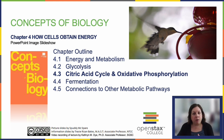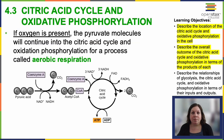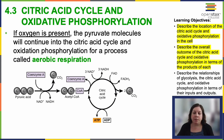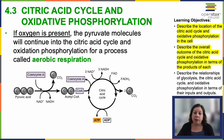Think back to our previous video on glycolysis — we left off with two pyruvate molecules. In eukaryotic cells, in the presence of oxygen, very important, we have to have oxygen present. The pyruvate molecules left over from glycolysis can be transported into the mitochondria, where they are then transformed into acetyl-CoA.